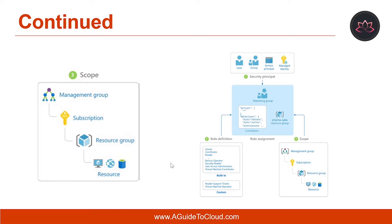Scope is the boundary that the access applies to. When you assign a role, you can further limit the actions allowed by defining a scope. This is helpful if you want to make someone a website contributor but only for one resource group. In Azure, you can specify a scope at multiple levels: management group, subscription, resource group, or resource. Scopes are structured in a parent-child relationship. When you grant access at a parent scope, those permissions are inherited to the child scope as well.